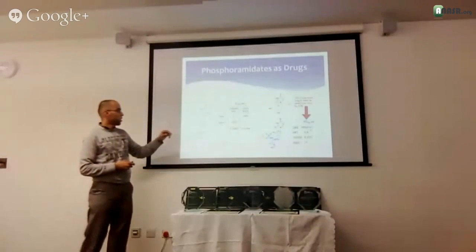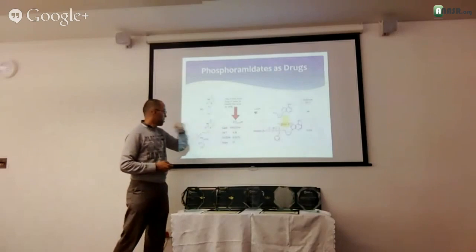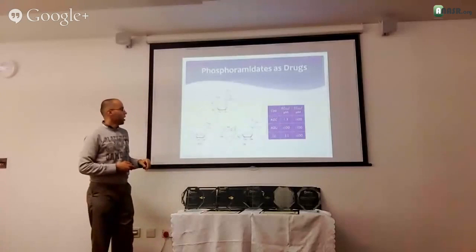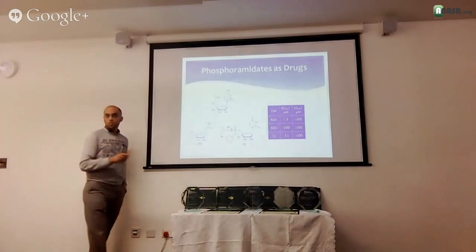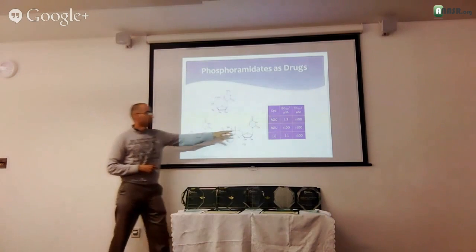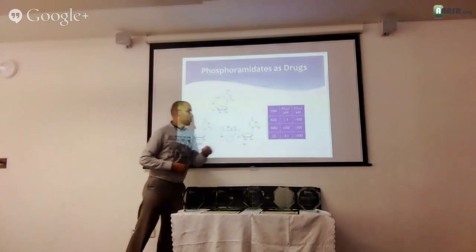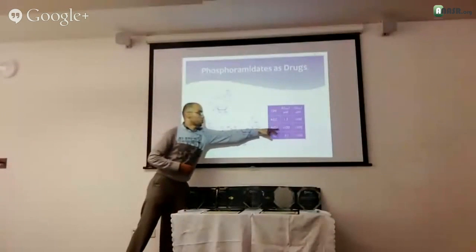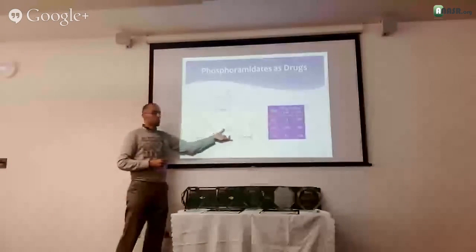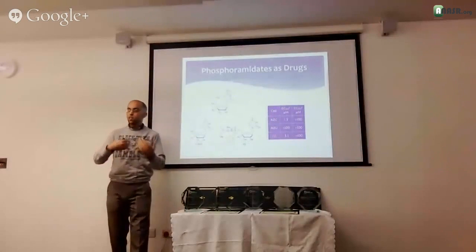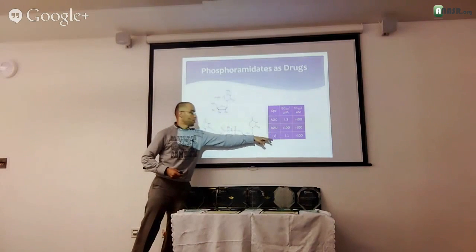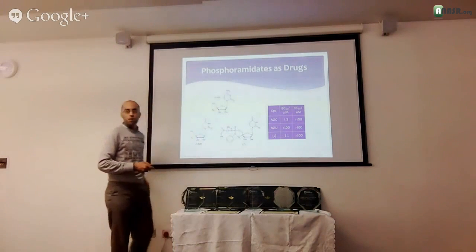The big story came from hepatitis C. For example, one compound that is completely inactive — activity at 1.3 micromolar, no effect whatsoever — if you put this phosphoramidate motif onto it, it allows it to get inside the cell and be active inside the cell. You go from something completely inactive to something with 3.1 nanomolar activity. That's the most impressive result.